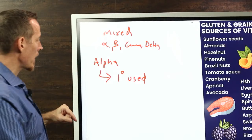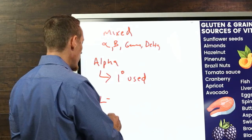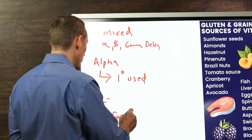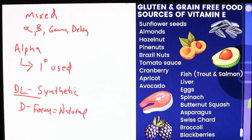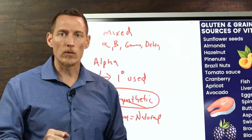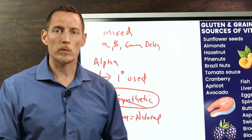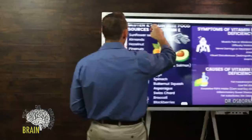It's also important to understand the difference between the d form and the dl form of vitamin E. You want the d form — that's the natural version. The synthetic dl form doesn't work as well as the natural form. So when shopping, look for the d version, avoid the dl synthetic version, and look for something with mixed tocopherols — generally it will say alpha tocopherol with mixed tocopherols, indicating it has alpha, beta, gamma, and delta versions.